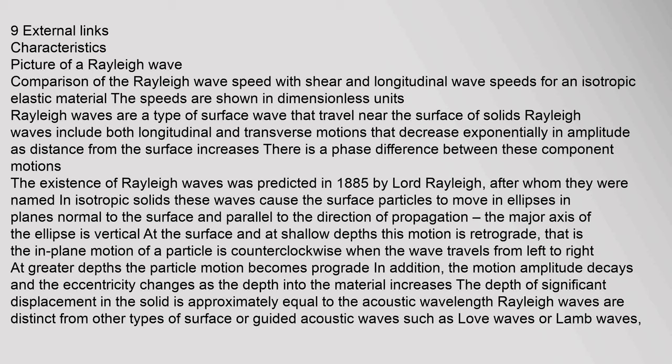Rayleigh waves are a type of surface wave that travel near the surface of solids. They include both longitudinal and transverse motions that decrease exponentially in amplitude as distance from the surface increases. There is a phase difference between these component motions. The existence of Rayleigh waves was predicted in 1885 by Lord Rayleigh, after whom they were named. In isotropic solids, these waves cause surface particles to move in ellipses in planes normal to the surface and parallel to the direction of propagation. The major axis of the ellipse is vertical at the surface and at shallow depths.